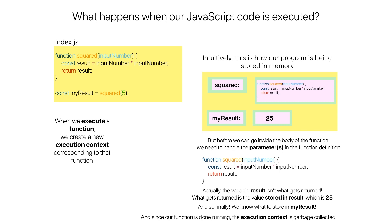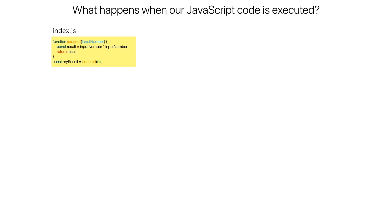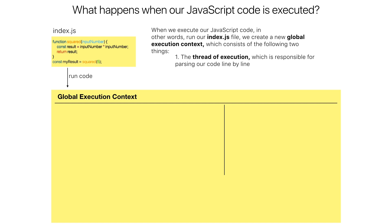Now we're going to go through the example one more time, but this time we'll see what the global execution context is in JavaScript. When we execute our JavaScript code — in other words when we run our index.js file — we create a new global execution context, which consists of two things. The first is the thread of execution, which is responsible for parsing our code line by line.